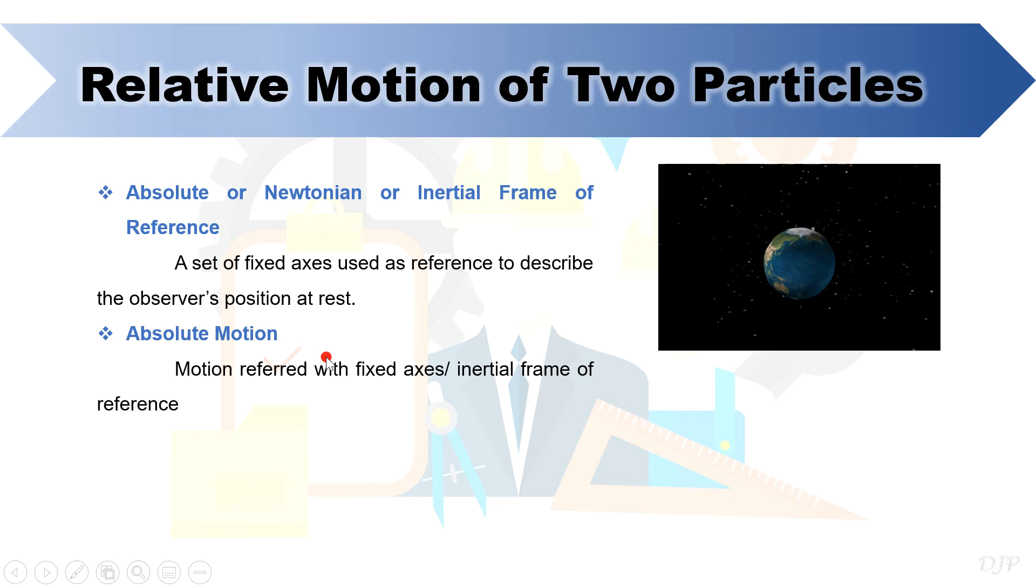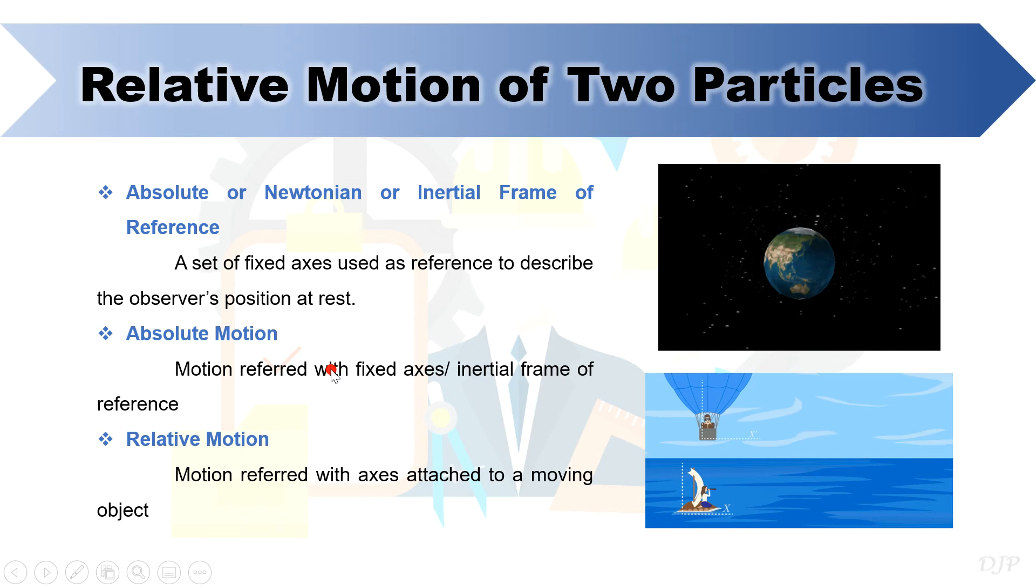Motion referred with such reference is called absolute motion, which we have already dealt with in our previous lecture. Now, how about if the reference itself is moving? For such motion, we refer that as relative motion. A simple example is this one where an observer inside the hot air balloon is itself moving aside from the motion of what is observed below.